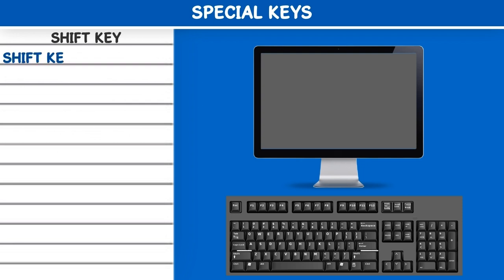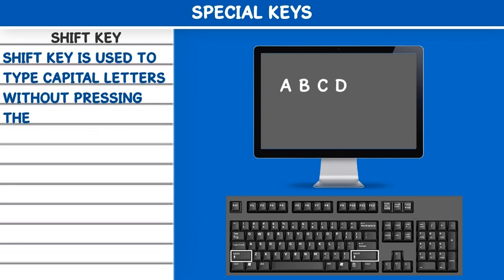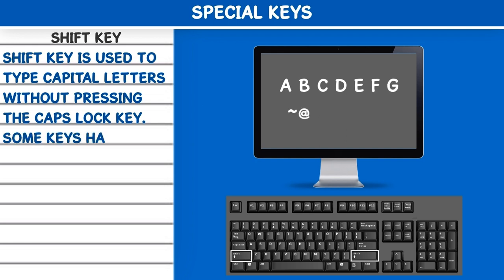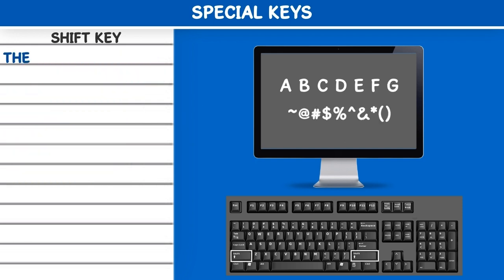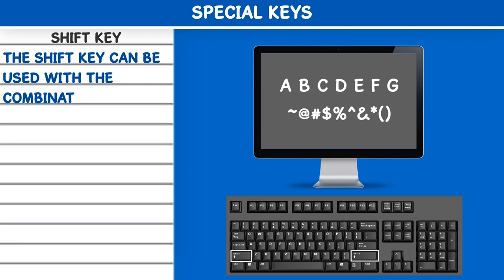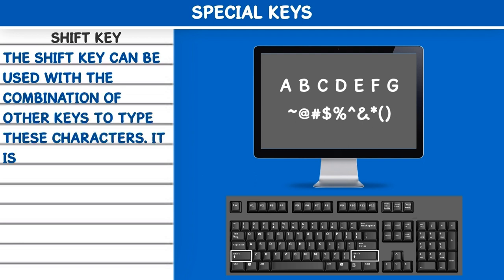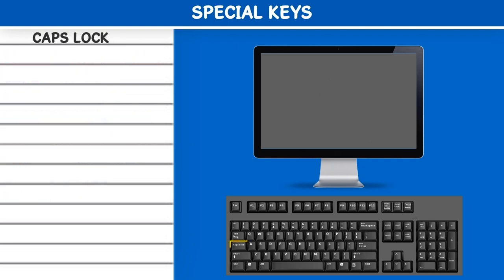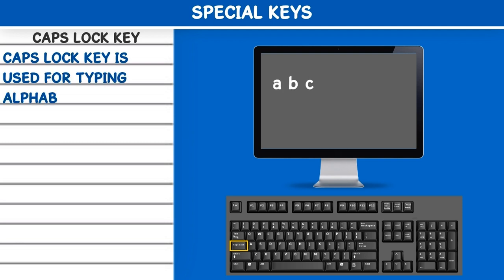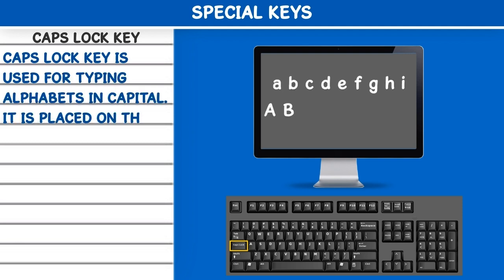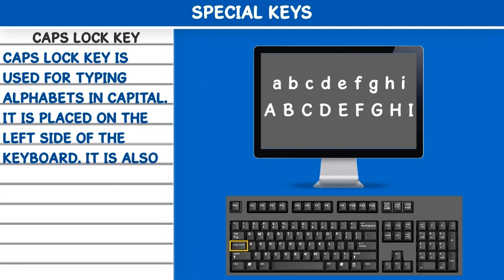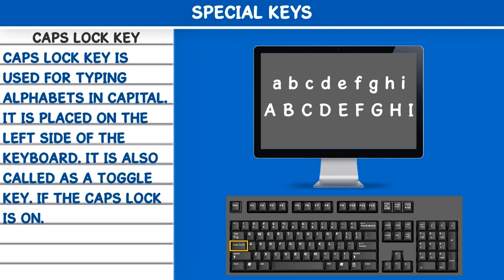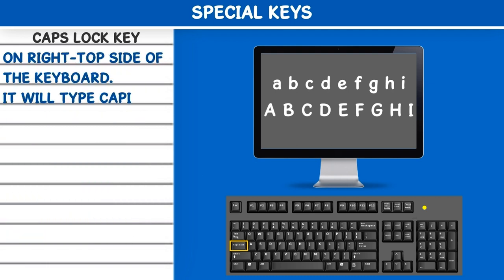Shift key: The Shift key is used to type capital letters without pressing the Caps Lock key. Some keys have special characters on their upper side; the Shift key can be used in combination with other keys to type these characters. It is present at two places on the keyboard. Caps Lock key: The Caps Lock key is used for typing alphabets in capital. It is placed on the left side of the keyboard and is also called a toggle key. If Caps Lock is on, you will see a yellow light on the right top side of the keyboard; it will type capital letters, and if it is off, it will type small letters.